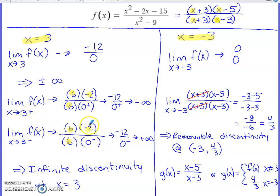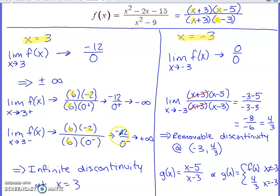On the smaller side of three, most sign components are the same. The key difference: a number slightly smaller than three, like 2.9, gives 2.9 minus three slightly below zero — negative. So the denominator is positive times negative, which is negative. Negative divided by negative is positive, giving positive infinity. This confirms an infinite discontinuity — a vertical asymptote — at x equals 3, with negative infinity on the right and positive infinity on the left.